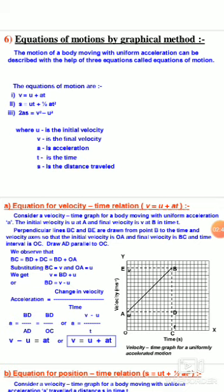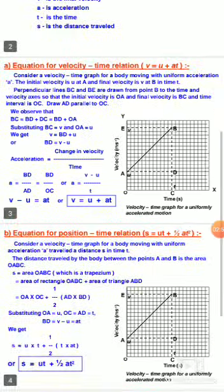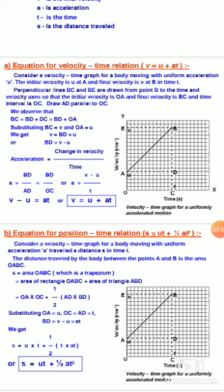So v minus u equals at, or v equals u plus at. This is the velocity-time graph for uniform acceleration motion. Second equation for position-time relation: s is equal to ut plus half at squared. Consider a velocity-time graph for a body moving with uniform acceleration a. The distance traveled by the body between points A and B is the area OABC.